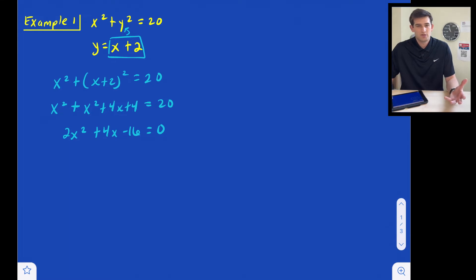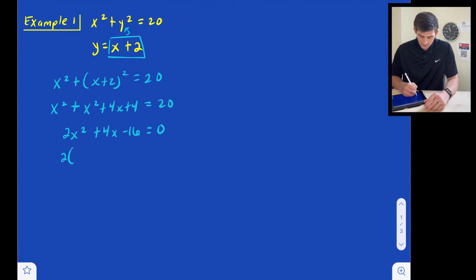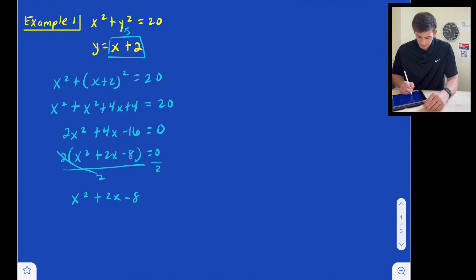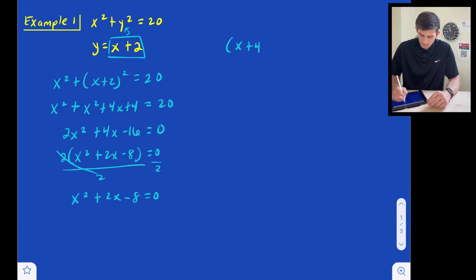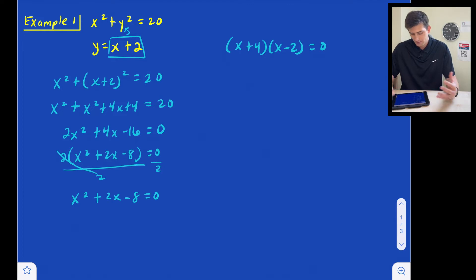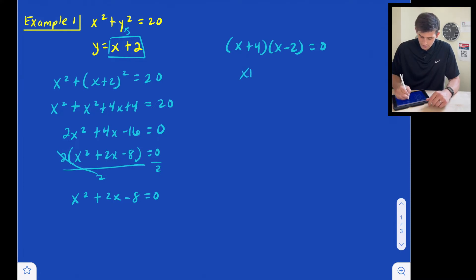Solving a quadratic, I'm always going to start by seeing if I can factor it. In this case, a is not 1, but a can be factored out, so let's factor out a 2. We get 2 times x squared plus 2x minus 8 is equal to 0. Dividing both sides by 2, we have x squared plus 2x minus 8 is equal to 0. We need to find two numbers that add to 2 and multiply to negative 8 — that's 4 and negative 2. So x plus 4 times x minus 2 equals 0. Setting each factor equal to 0: x plus 4 equals 0 gives x equals negative 4, and x minus 2 equals 0 gives x equals 2.